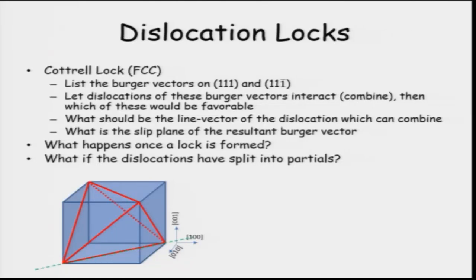For example, if you take two planes — we know that in FCC all the {111} planes are the glide planes and form part of the slip system. Let us take (111) and (11̄1). In the cell drawn on the bottom left, I have marked a tetrahedron which displays all four possible {111} planes. The (111) plane has been highlighted, and now the (11̄1) plane is marked. These edges all represent the Burgers vector — there are three possible ones for (111) and three for (11̄1). There will always be one common Burgers vector whenever we have two planes.